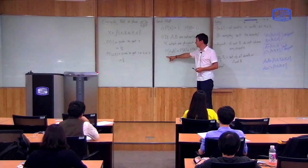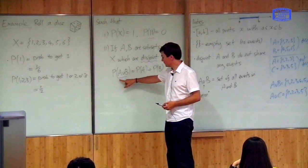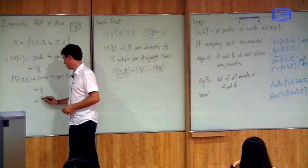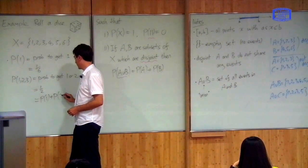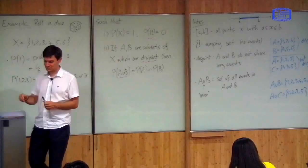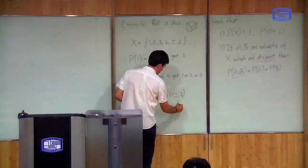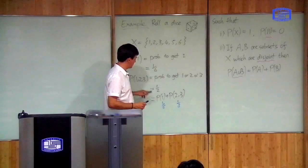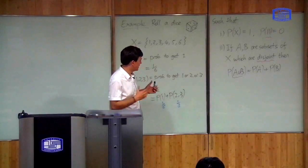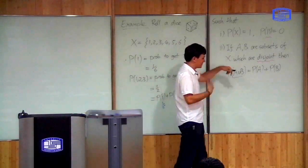We can now apply this to the axiom: if the sets are disjoint, then the probability of the union is the sum of the probabilities. For example, I can write P({1,2,3}) as the probability of getting 1 plus the probability of getting {2,3}. The probability of getting 1 is 1/6; the probability of getting 2 or 3 is 2/6, which is 1/3. So the probability of getting 1, 2, or 3 is 1/6 plus 1/3, which is a half — so you add probabilities. The probability of A or B is the probability of A plus the probability of B.